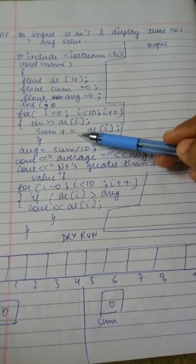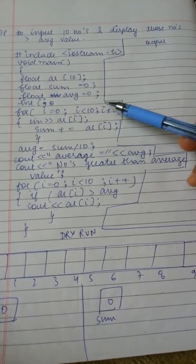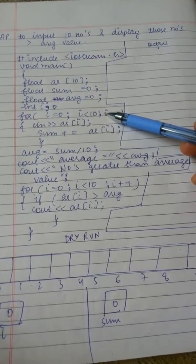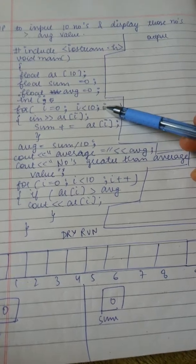To input the numbers and find the sum, we will make use of a for loop as we need three statements: the initializing statement, the expression statement, and the increment statement.